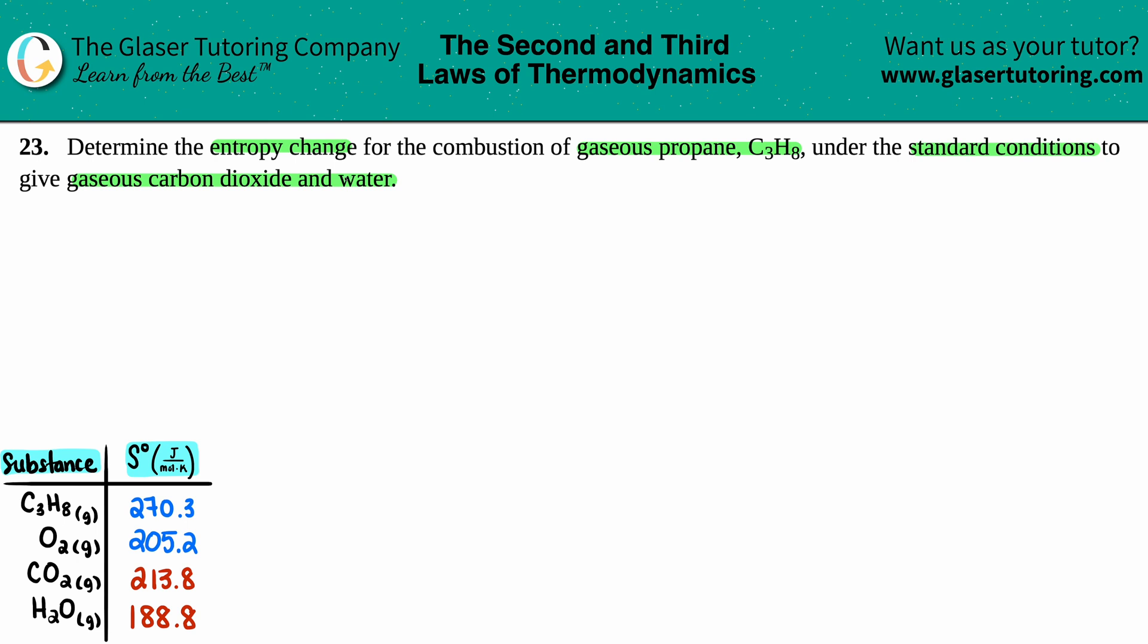They told us that we're producing gaseous carbon dioxide and water. Now in the grand scheme of things, we want to find out that entropy change. That's the question. So entropy, remember, is capital S and a change is final minus initial, which can be signified as a delta, the triangle.